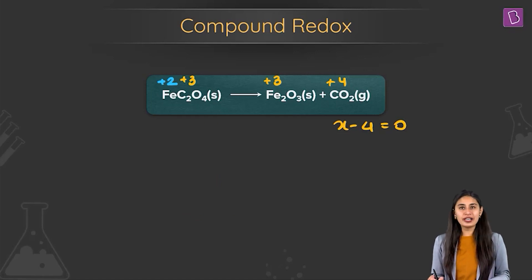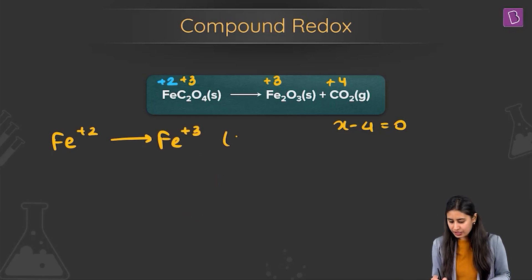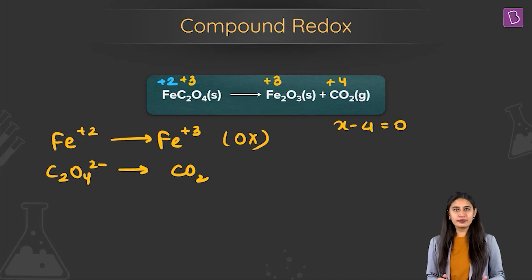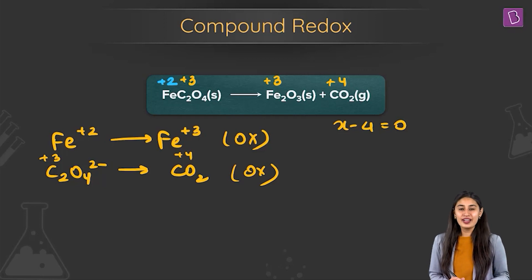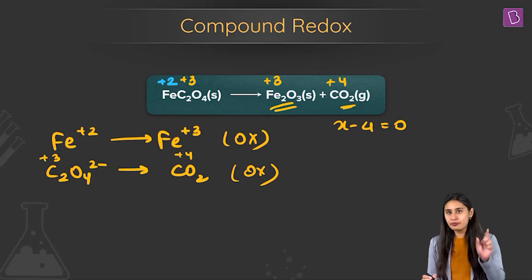Look at this. Plus 2 to plus 3. Iron plus 2 to iron plus 3. Oxidation. What about oxalate iron C2O4 to minus 2CO2? What about this? Look at this. From plus 3 to plus 4, again, oxidation. Loss of electron. So the reactant is undergoing oxidation. It is giving you two products. The one particular compound in the reactant is giving you two products. And both the two reactions involved in this half reaction is oxidation.